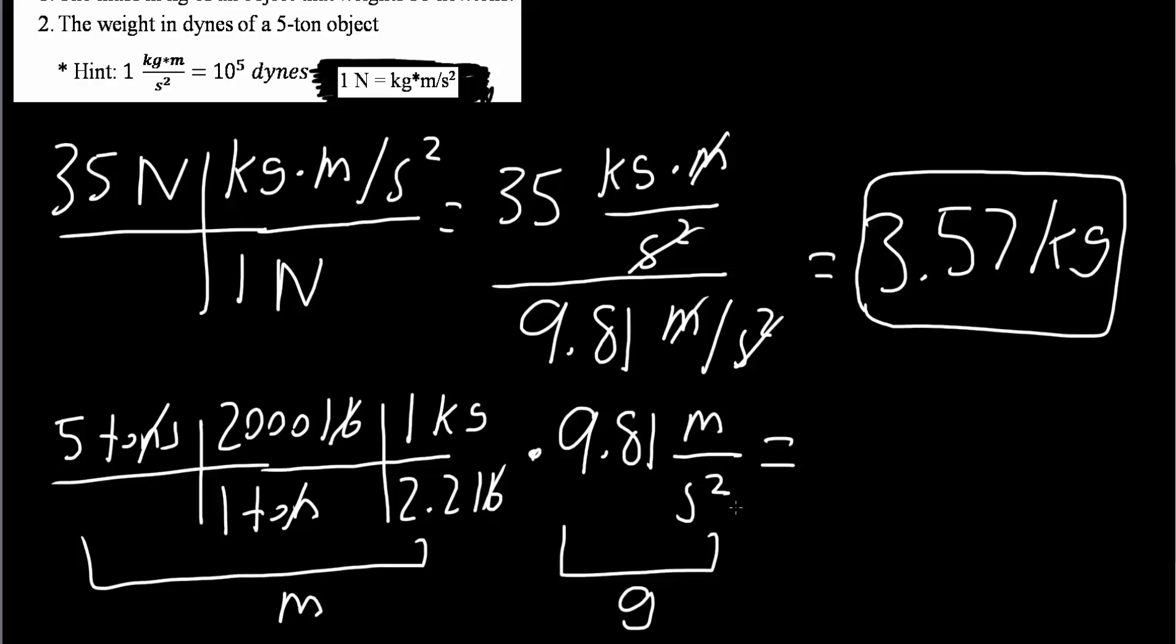If we multiply this out, we would get 44,591 kilograms times meter divided by seconds squared. We're not done yet because in this problem, we want to convert into dynes. And so we'll have one more step using this relationship right here.